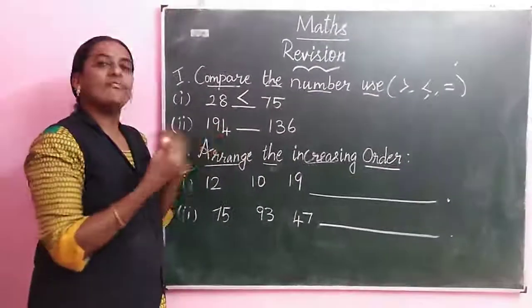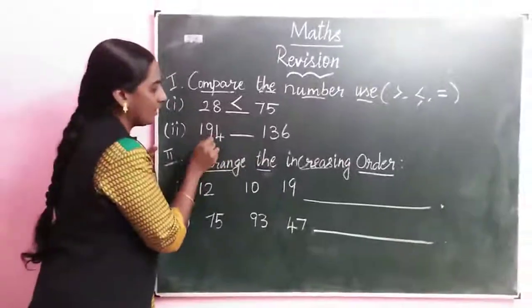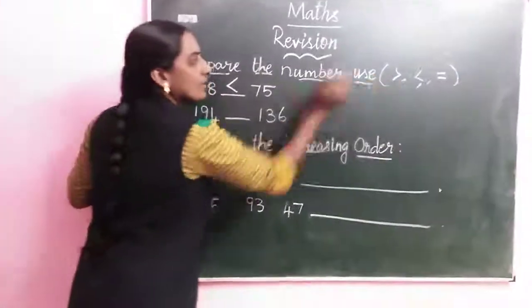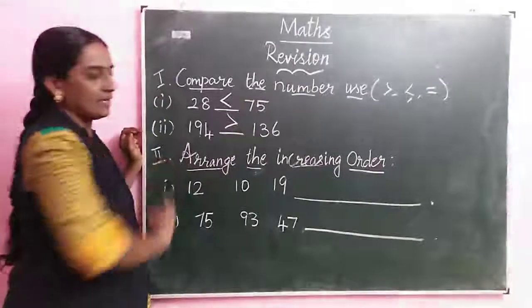So now different numbers. Compare the numbers. Nine and 3, which is a big number? Nine. So now we are using the symbol greater than.